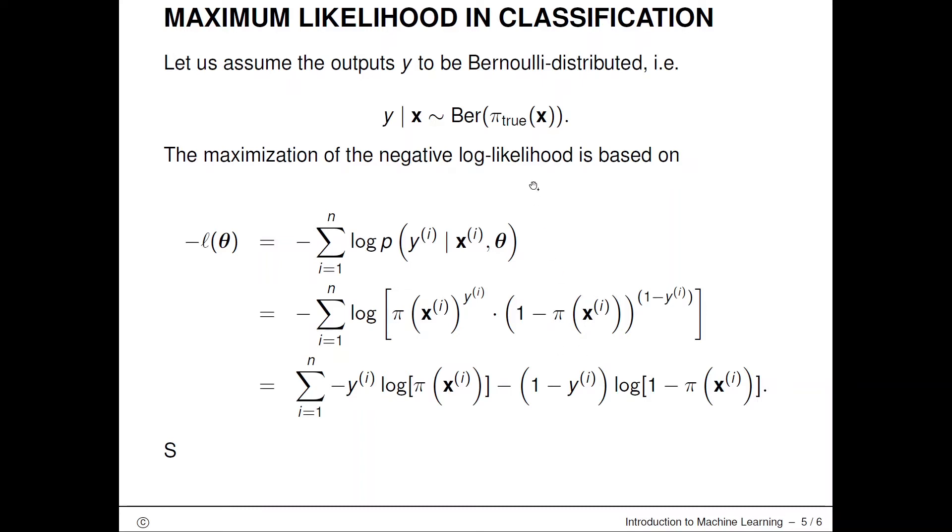We just have to assume that the outputs of our statistical classification model are Bernoulli distributed. I will consider y given x and make a distributional assumption. I will write this as a Bernoulli distribution conditional on x, where the true probability of y being equal to one is determined by this pi_true(x) function. This is a function of x because we are in this conditional distribution.